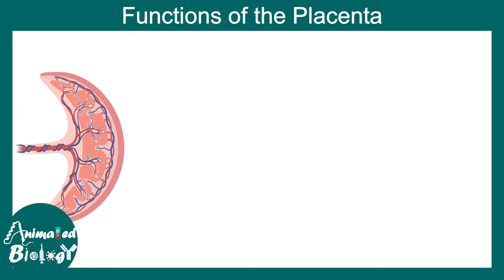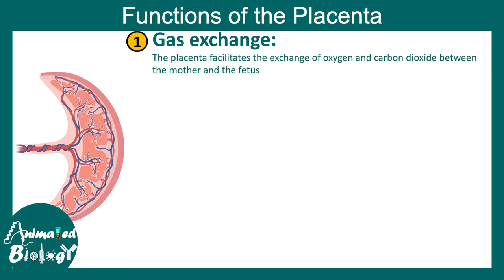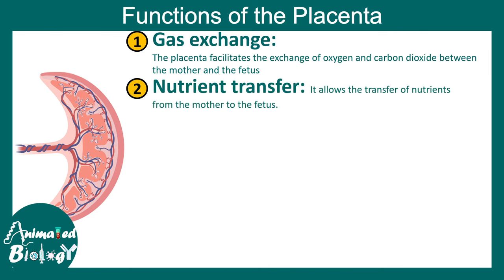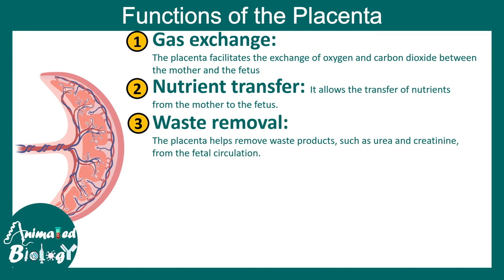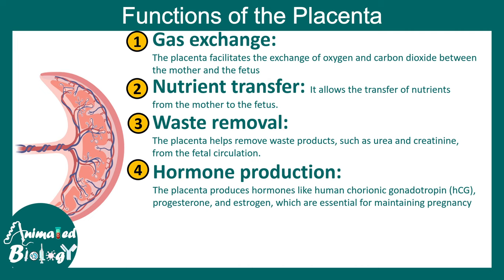Now let's dive into the functions of placenta. The key function is gaseous exchange — the placenta facilitates the exchange of oxygen and carbon dioxide between the mother and fetus. Then nutrient transfer: the baby cannot eat within the mother's womb, so all nutrition comes from the mother's body and is transferred to the baby via the placenta. It is also a platform for waste removal, helping remove waste products such as urea and creatinine from the fetal circulation. Placenta is also an active site for hormone production — it's an endocrine tissue. It produces hormones like human chorionic gonadotropin, which is detected in the urine during pregnancy.